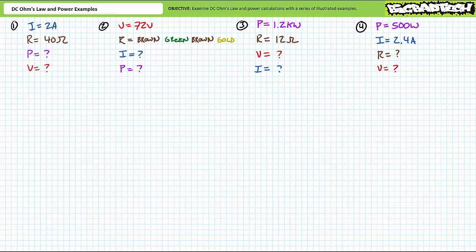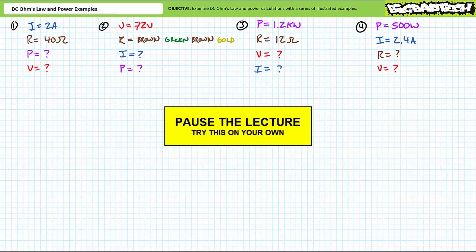See if you can use another algebraic permutation of either DC Ohm's Law or the power equations to check your work. Ideally, both methods should yield the same results. Express all answers in proper engineering format to the tenths place. By all means, pause the lecture and try this on your own.